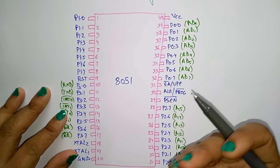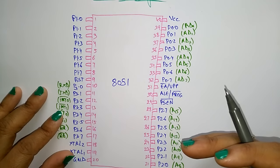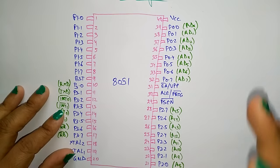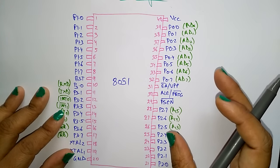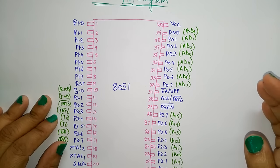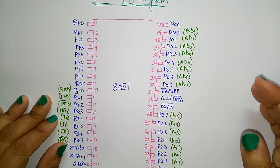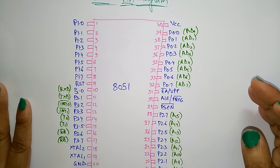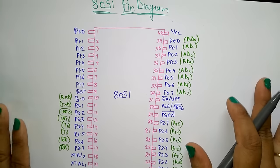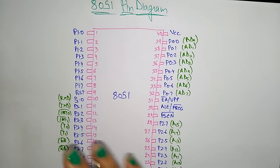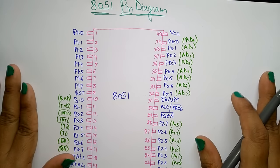Whereas in a microprocessor, only the CPU — that is the central processing unit — ALU, registers and control unit are present. All other components like RAM, ROM, counter timers and counter registers are connected externally. That is the main difference between the microcontroller and the microprocessor.